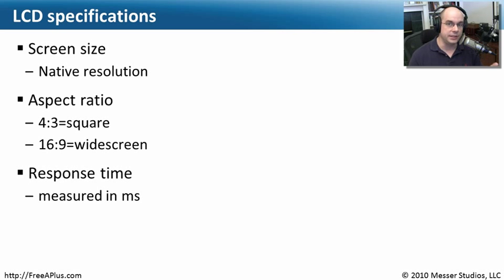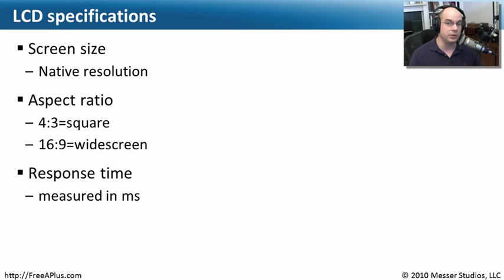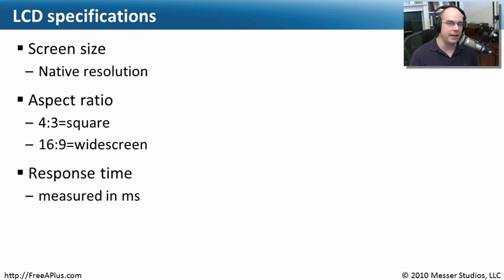When speccing out an LCD display, you'll see several key specifications. First is screen size. When looking at a display, you want to know not only how big the LCD screen is, but also what its native resolution is. The native resolution needs to match what you're normally going to use on your computer. If you aren't matching the native resolution of your LCD display with the resolution setting on your computer, it will try to adjust, but your screen won't be as crisp. Make sure the maximum capabilities of your video card match the native resolution capabilities of the LCD display you're purchasing.